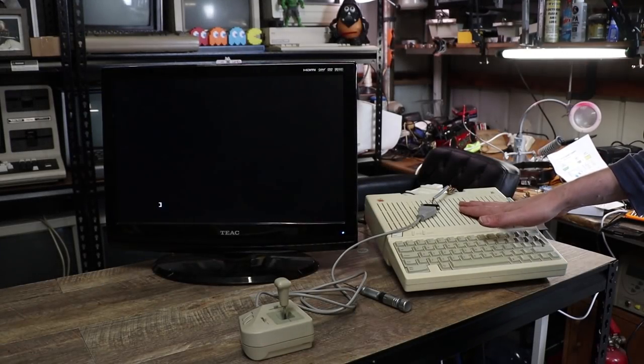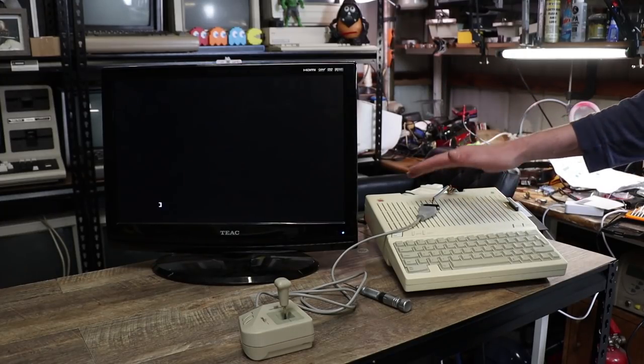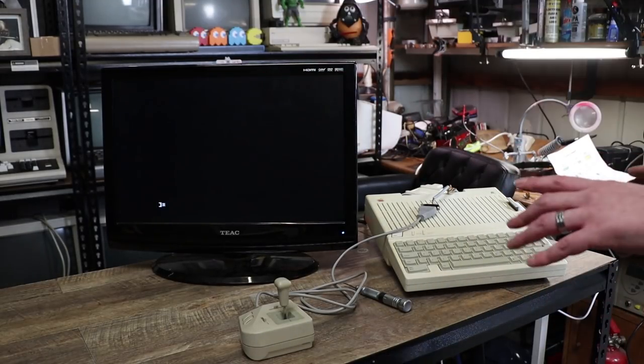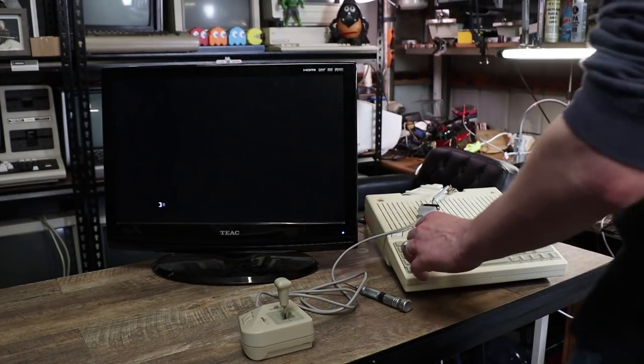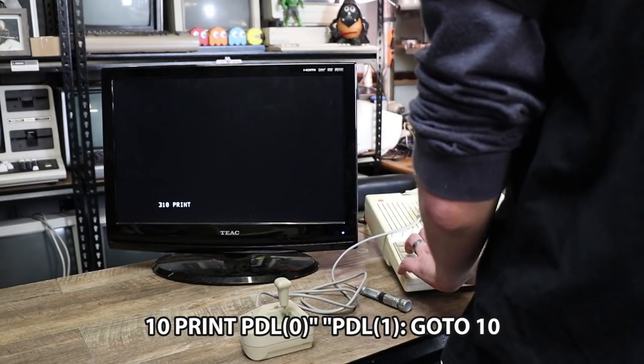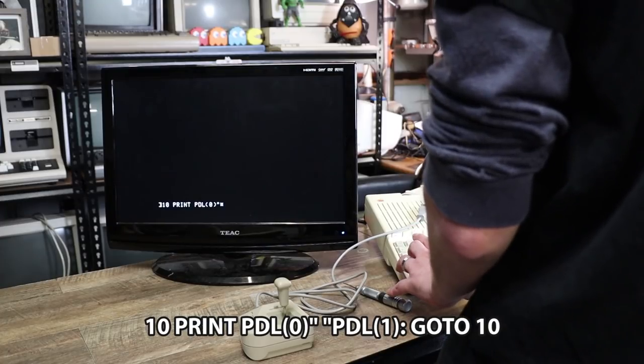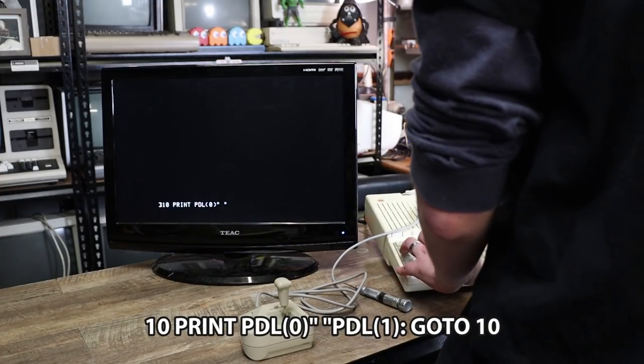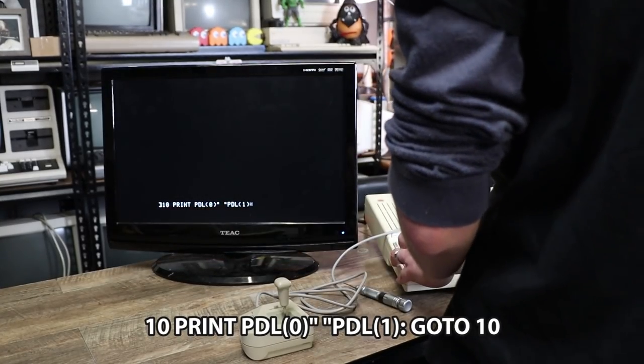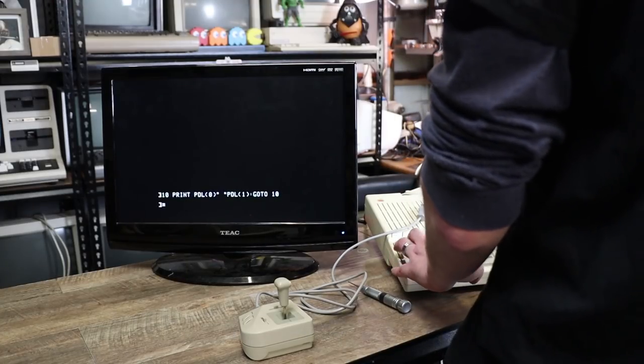Right, so I've pulled the 2c out. The joystick is plugged into the adapter which is plugged into the 2c. For ease of use I've got it plugged into an LCD and I've dropped to basic. So there's a little basic program I guess you could say that we want to put in and I'll put this in the description, but it is 10, print PDL for paddle 0 then quote space quote PDL 1, so that will give us both our paddles, and then simply colon go to 10. And if we run that it'll start displaying a bunch of numbers.